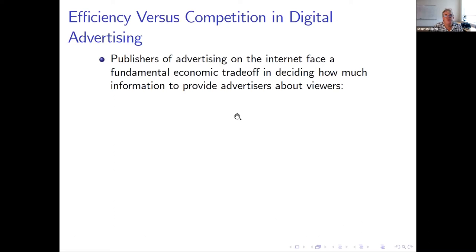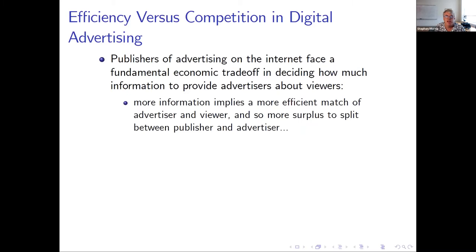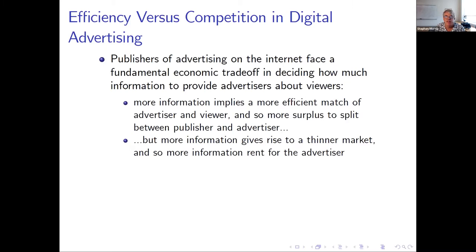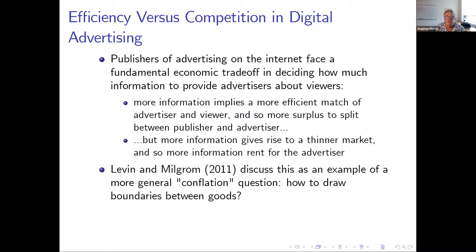In digital advertising, there's a well-known basic question about efficiency versus competition. Publishers of advertising face a basic economic trade-off concerning how finely they want to define impressions, or how much information they want to provide advertisers with. More information implies a more efficient match between advertiser and viewer, so there's more surplus to split, but more information gives rise to a thinner market. If there's just a unique person interested in that viewer, the advertiser is going to be losing information rent. This is a basic trade-off.